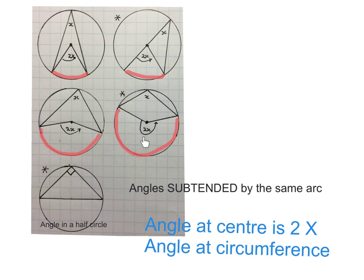The angle at the center is subtended by this arc, and the angle on the circumference is subtended by this arc. They're both sitting on the same arc. You will get the feeling if you look at this once or twice.